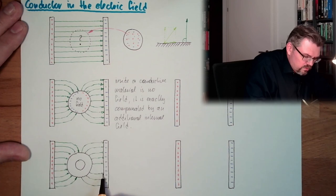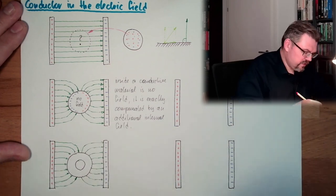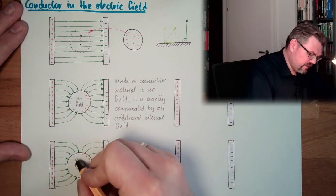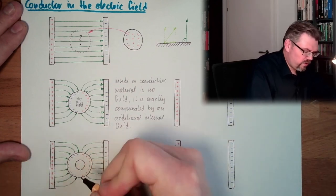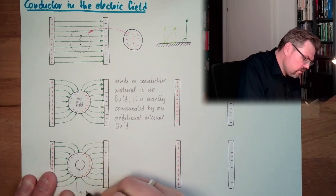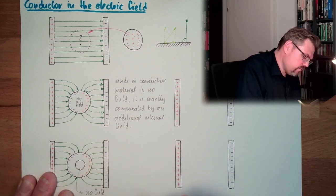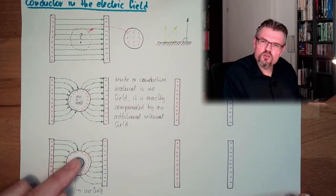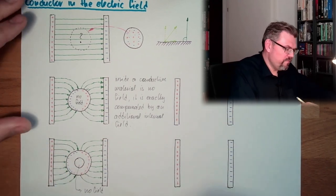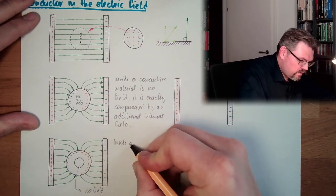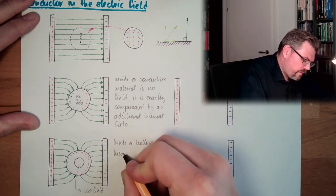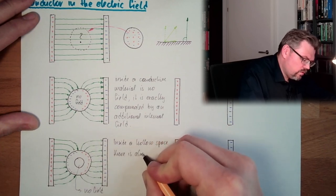The charges are on the outer surface: on this side we have the plus charges, on this side we have the minus charges — they are always equal. And if there is a hole in the middle, there is also no field inside. Even though there is no material left in the hollow space, the field is still compensated. So inside a hollow space of a conductive shell, there is also no field.